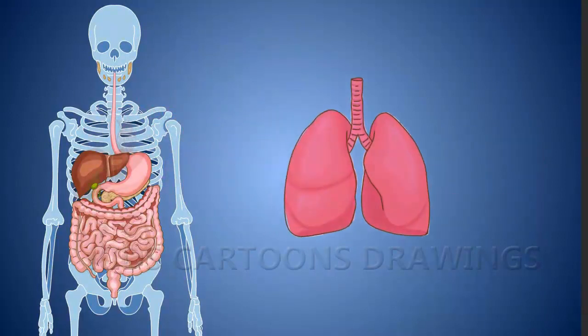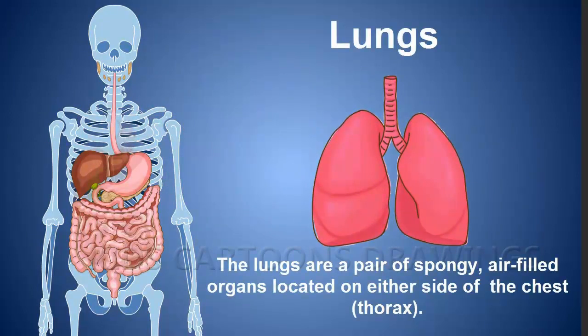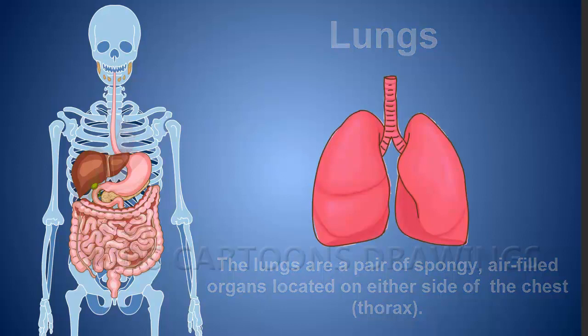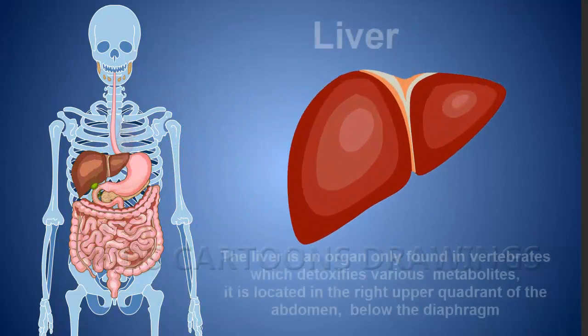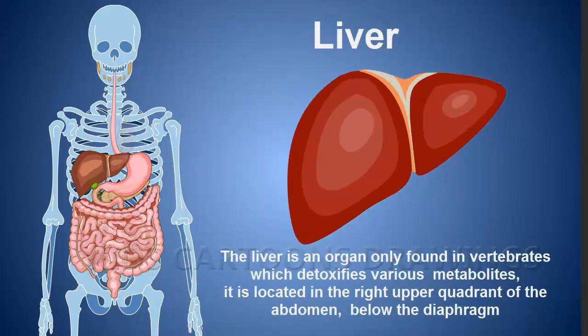Lungs: The lungs are a pair of spongy air-filled organs located on either side of the chest thorax. Liver: The liver is an organ only found in vertebrates which detoxifies various metabolites. It is located in the right upper quadrant of the abdomen below the diaphragm.